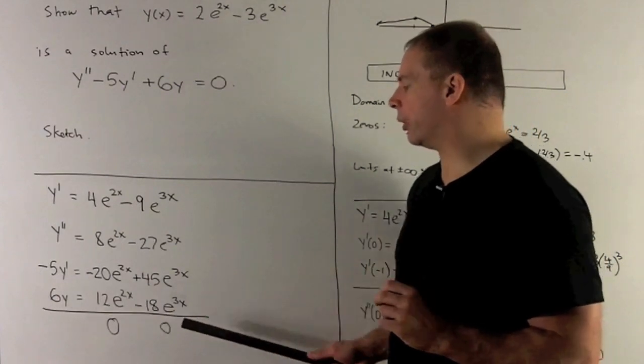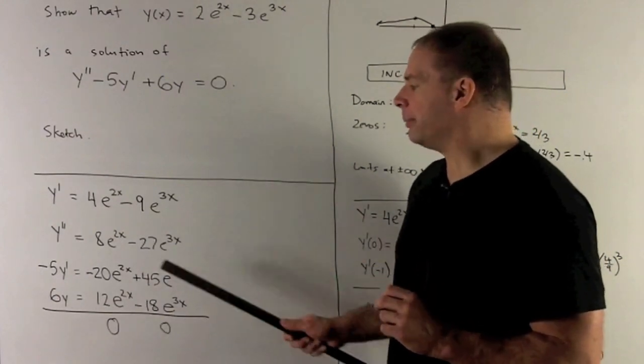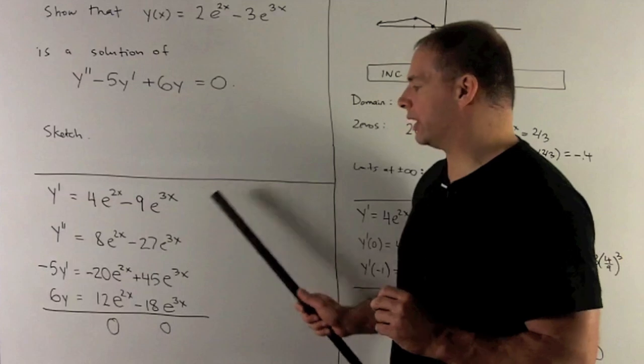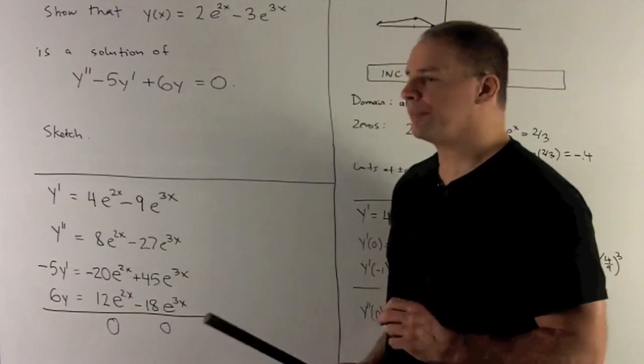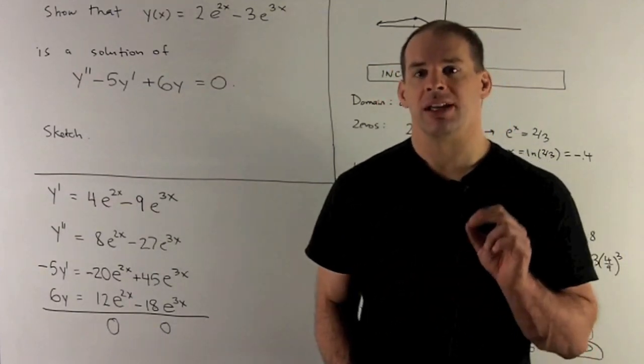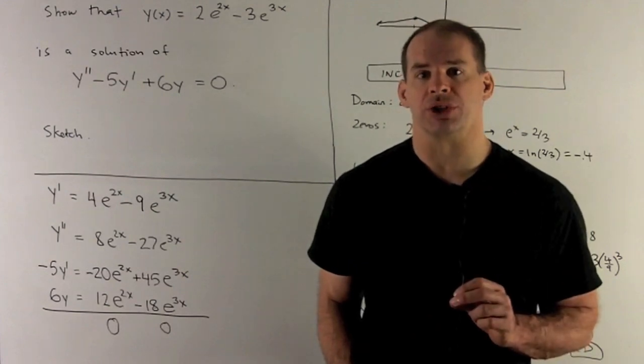And then what do we note? If I add down each column, collecting e^(3x), e^(2x), we get zero. So our function is a solution to that differential equation.